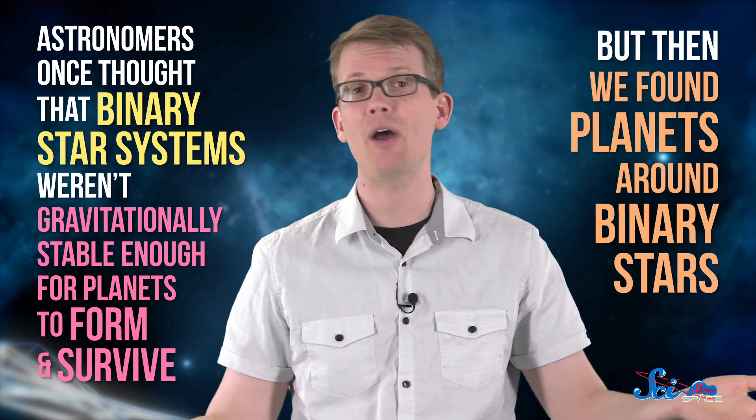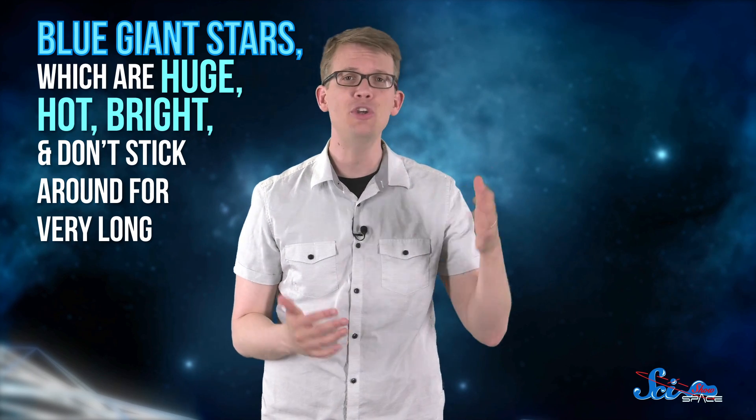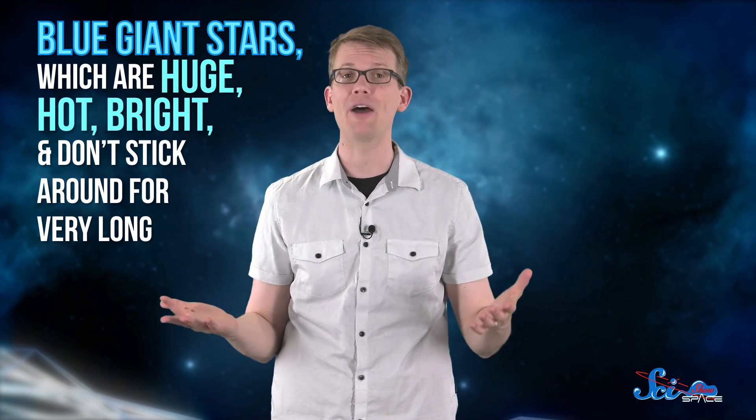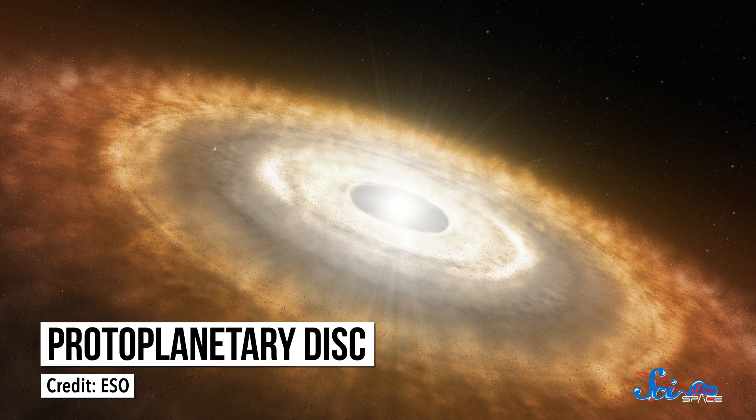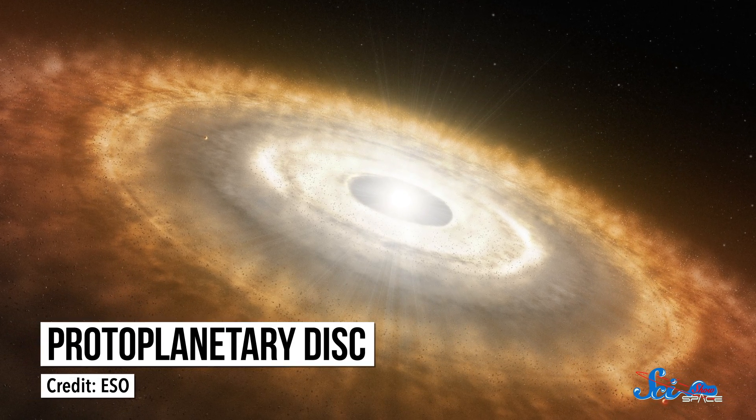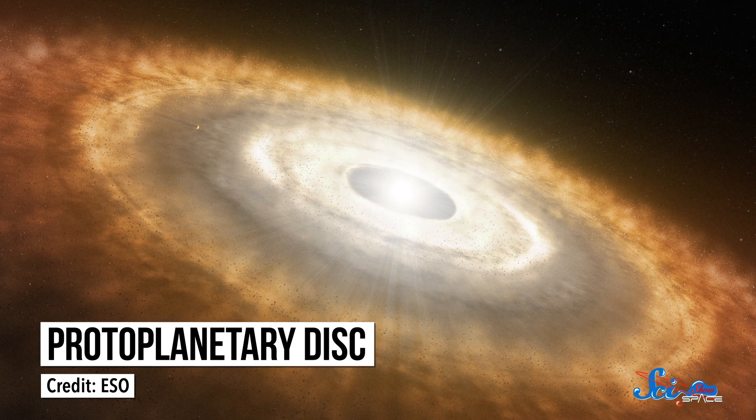But then we found planets around binary stars. Astronomers also used to think that blue giant stars, which are huge, hot, bright, and don't stick around for very long, were too intense for planets to form around them. The matter the planets would form from would be blown apart before it could condense. But then we found protoplanetary disks, the disks of rock and gas and dust that planets form from, around blue giant stars.